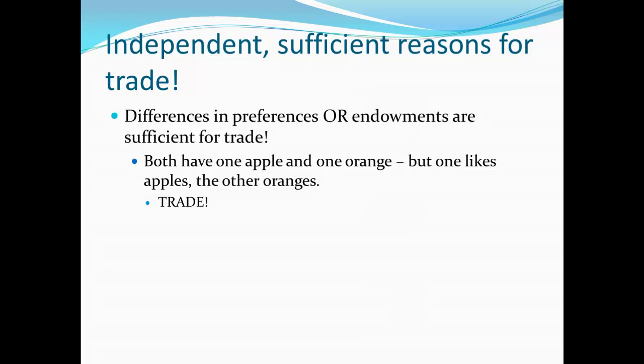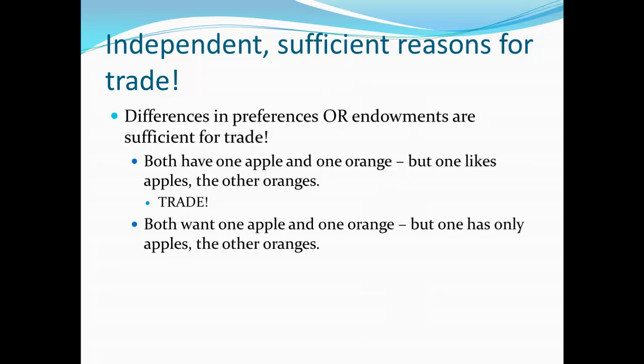At the same time, suppose we have two people that want the same things — they each want to have one apple and one orange. But in this case, one person only has apples and the other person only has oranges. There is still room for trade. I can take one of my apples, trade it with you, and get an orange in exchange. We each get what we want — a blend of apples and oranges. We started with different things and, as a result, had a reason to trade.